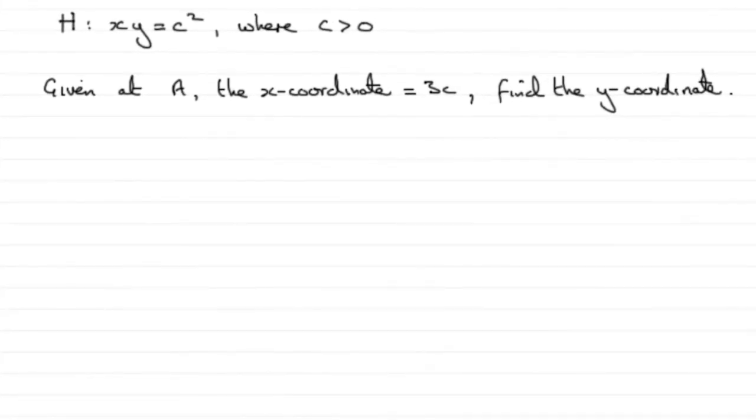Okay then, nice easy question to start with here. We've got hyperbola H with equation xy equals c squared where c is a positive constant. We've got a point A on the hyperbola H, x coordinate is 3c, and we've got to find that corresponding y coordinate in terms of c.